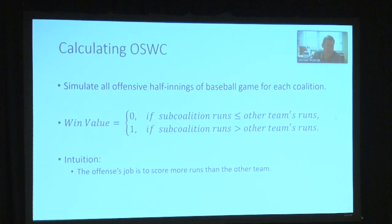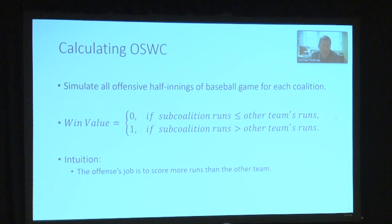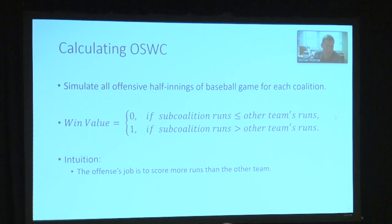The second measure is Offensive Shapley Win Credits. Whereas for Shapley Run Credits I simulate an inning and all the possible things that could happen for all sub-coalitions, for Shapley Win Credits I simulate an entire game for each sub-coalition of the players. If that sub-coalition is able to outscore the other team given the runs the other team scores, then that sub-coalition has a win value of one; otherwise it's zero. This is a win credit where the team splits credit for each win they record.